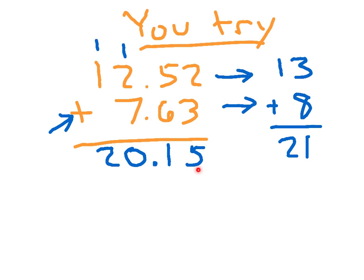Now 20 and 15 hundredths is relatively close to 21. We've got a 20 number and a 21 number. The reason that this one is bigger, the 21 is bigger, is because I did go up here to 13 and I did go up here to 8. So there's more that was given here, and that's why this answer is reasonable.